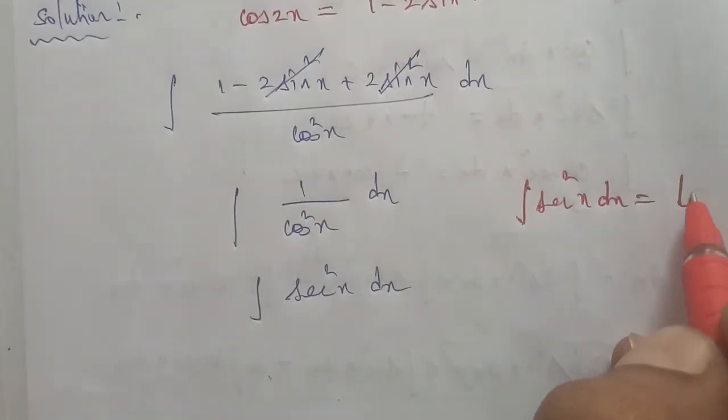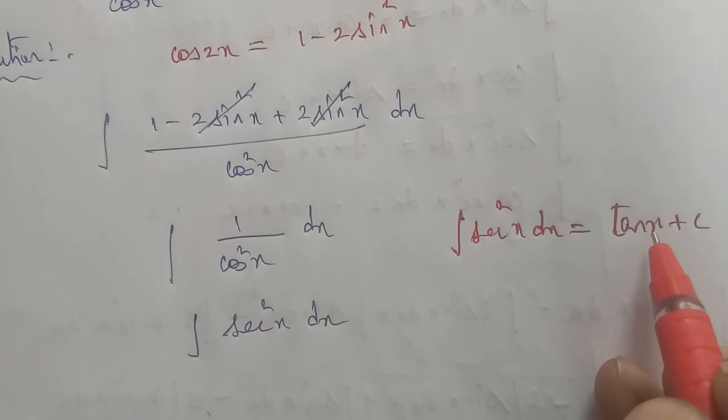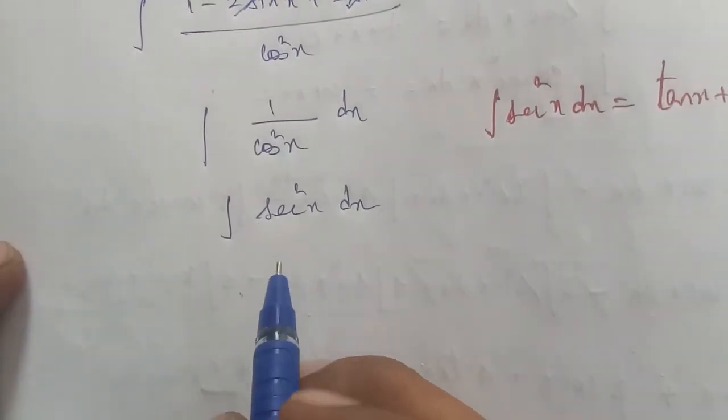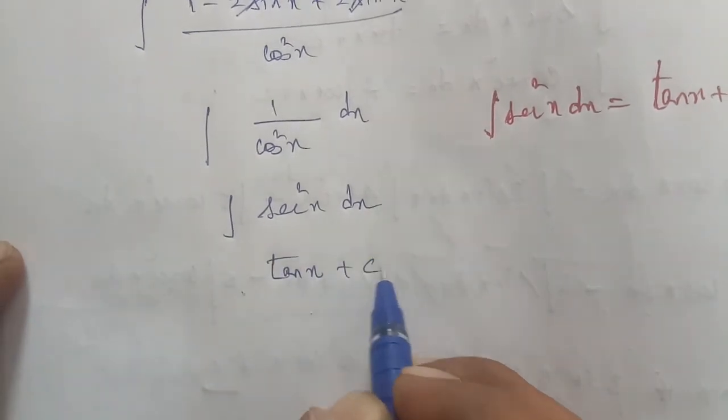Integration of sec square x is tan x plus c. So the formula entry point, your answer is finished. Therefore integration of sec square x is tan x plus c. Thank you.